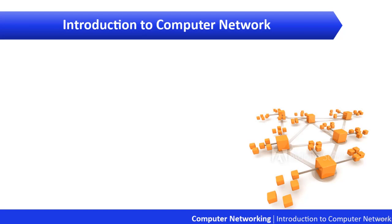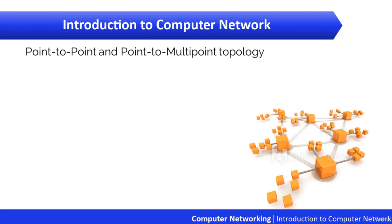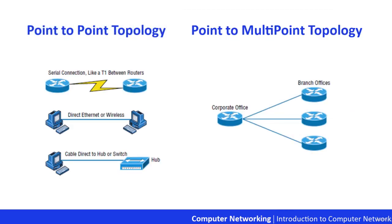In this last lecture on network topologies, we are going to see two different types: point-to-point topology and point-to-multipoint topology. As its name implies, in a point-to-point topology you have a direct connection between two routers or switches, giving you one communication path.